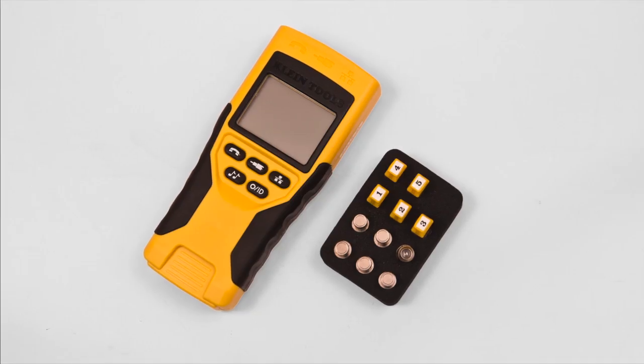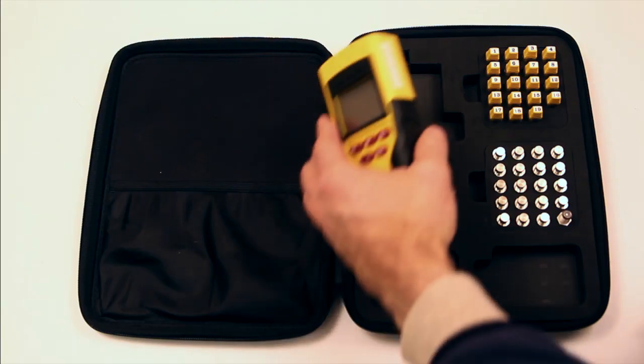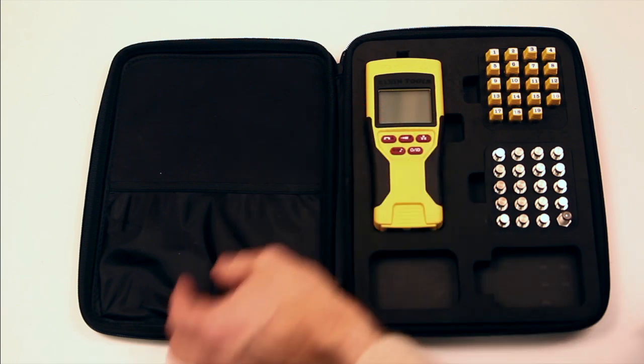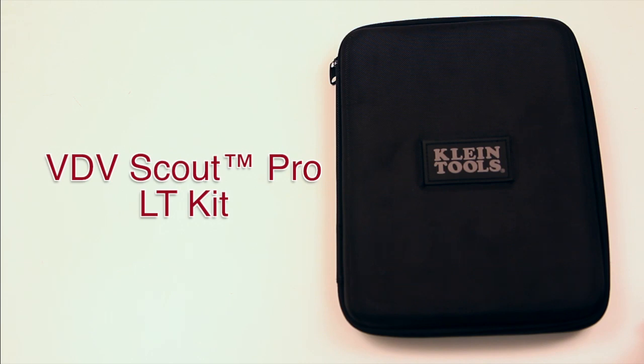The VDV Scout Pro kit comes with 5 location ID remotes and a convenient holder. The VDV Scout Pro LT kit comes with a full set of ID remotes and a durable protective carrying case with custom designed compartments to hold the tester and accessories securely.